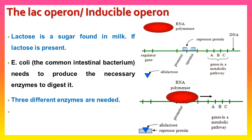The lac operon, also called an inducible operon, is responsible for the metabolism of lactose — a sugar found in milk. If lactose is present, E. coli needs to produce the necessary enzymes to digest it. Three different enzymes are needed. On the right side of the lac operon are three different genes — A, B, and C — which produce enzymes responsible for the metabolism of lactose. On the left side is a regulatory region which produces the repressor protein.